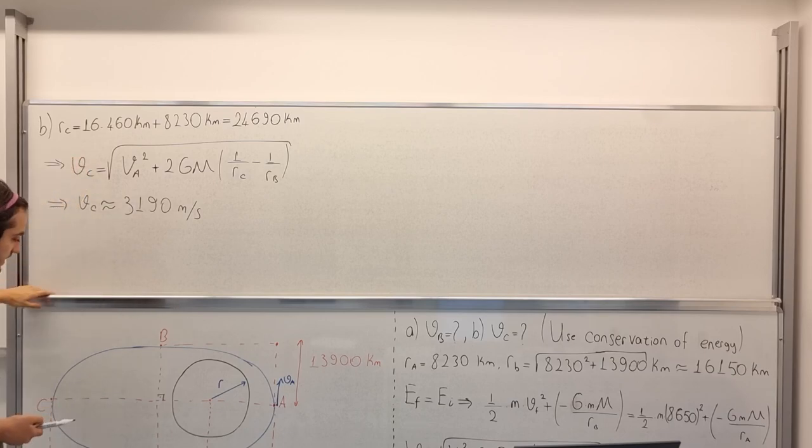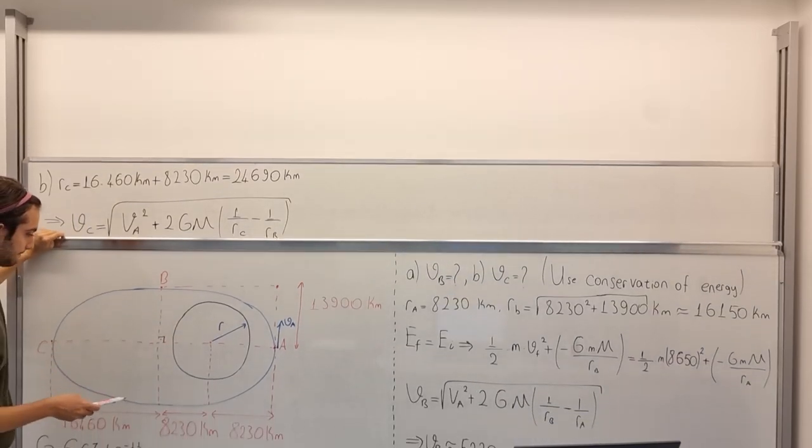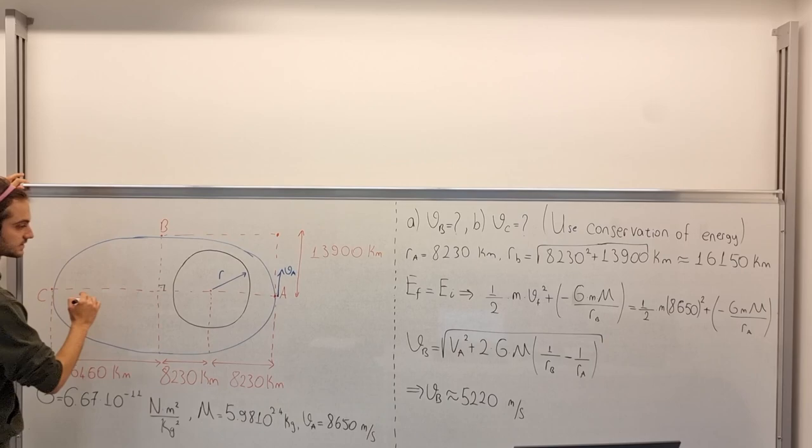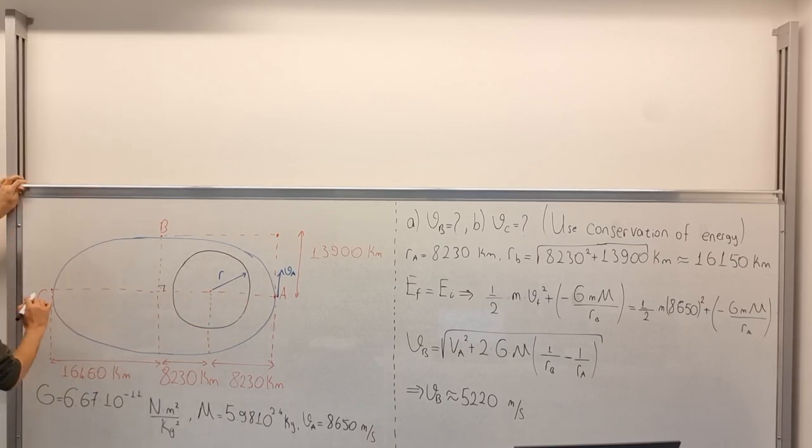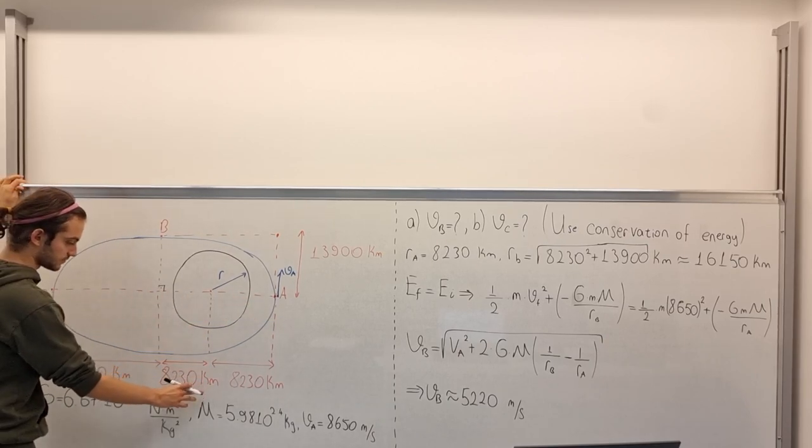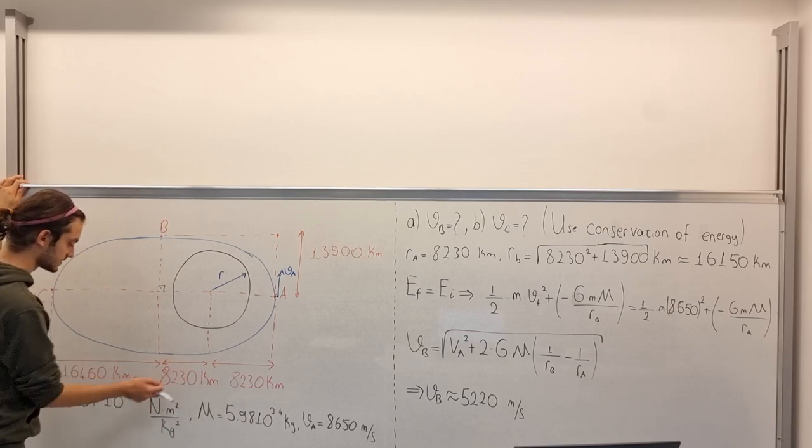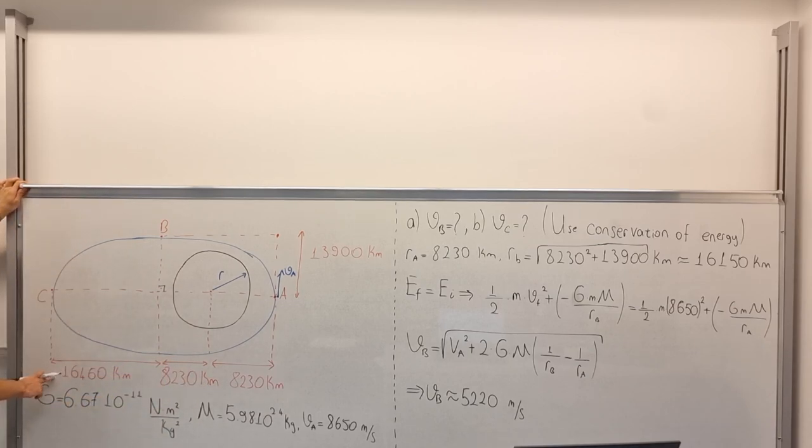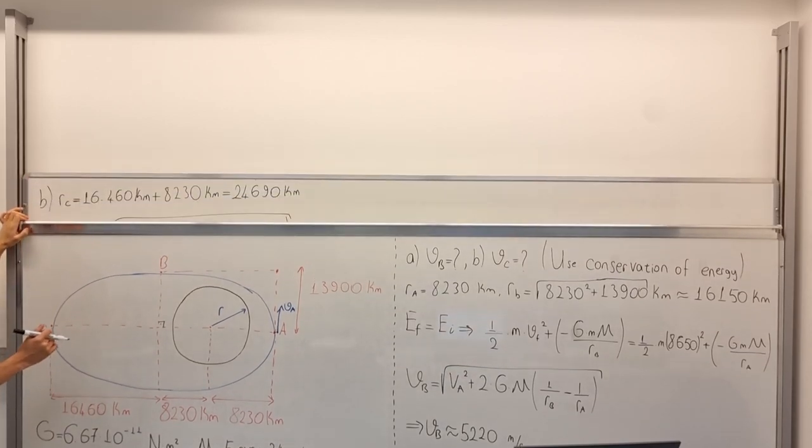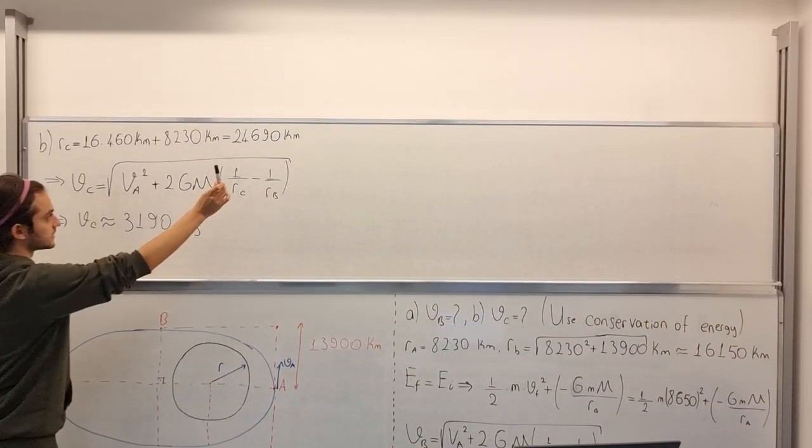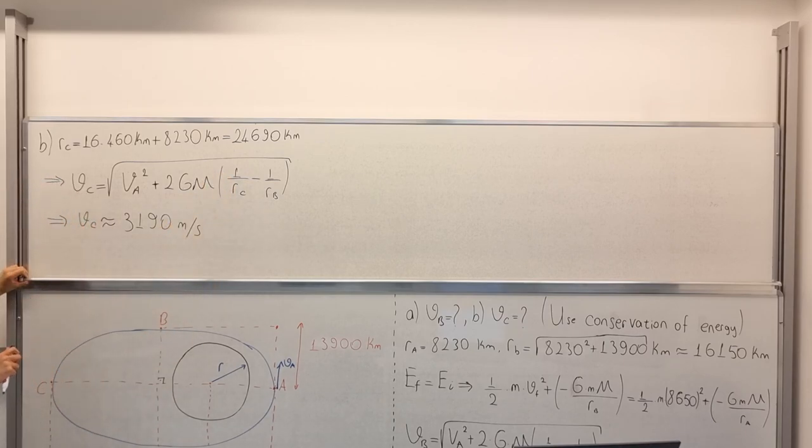RC is, as you can see, RC is exactly at the opposite direction. So, this is 8,230 kilometers, this is 16,460 kilometers, adding them up, we get 24,690 kilometers.